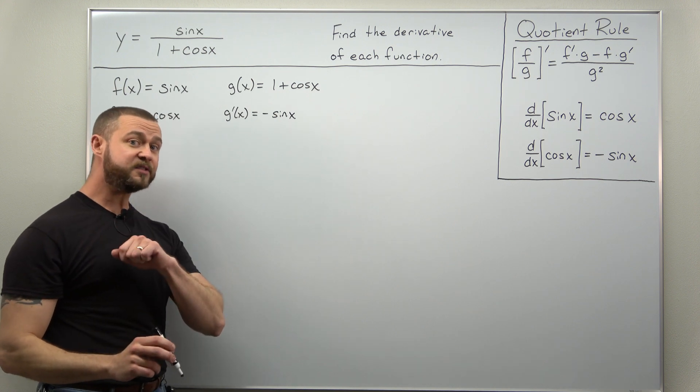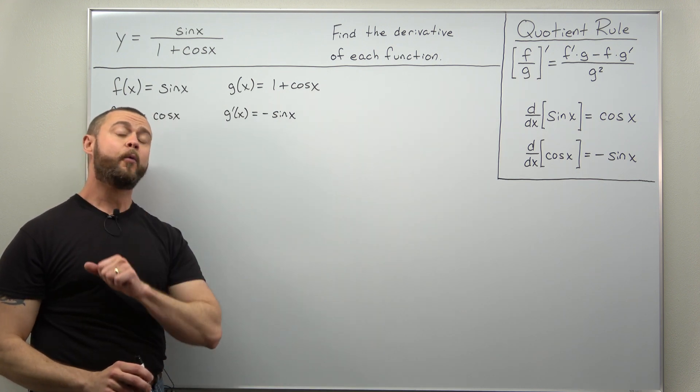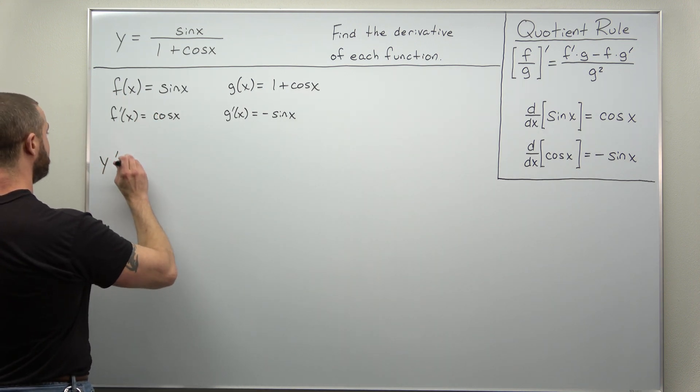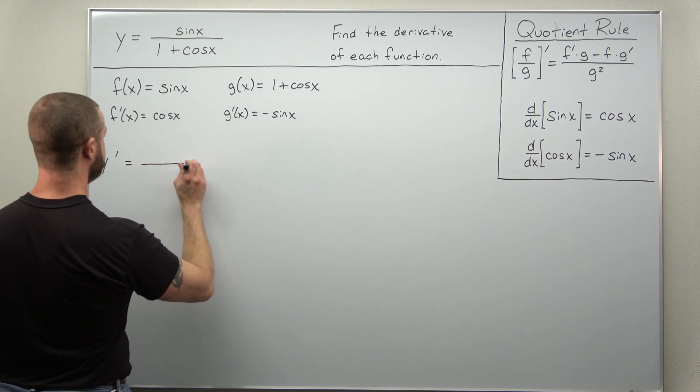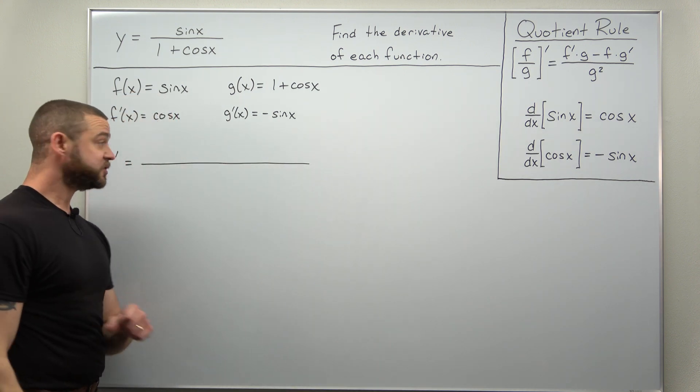All right we have all of our pieces we just need to combine them back together with the quotient rule and we're going to take our time in simplifying that. So our function is y we're going to get the derivative as y prime and let's put our pieces back together.